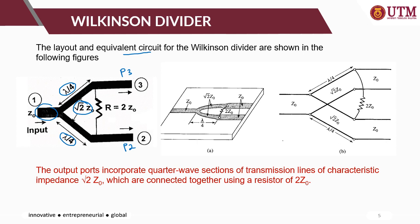If you still remember from the lambda-over-4 transformer design, the characteristic impedance of the transformer is equal to Z1, which equals the square root of Z-in times Z-naught. So Z-in and Z-naught are used to calculate the characteristic impedance of the lambda-over-4 transformer.